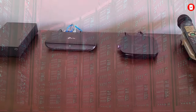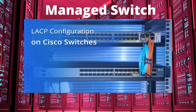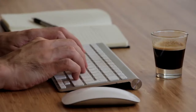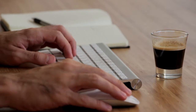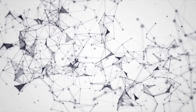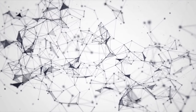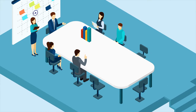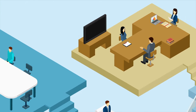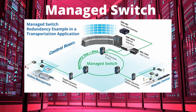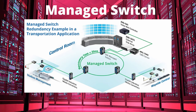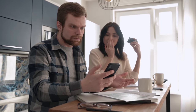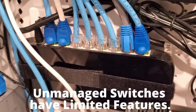On the other hand, a managed switch allows you to manage, configure, and monitor the settings of your LAN, including controls over LAN traffic, prioritizing certain channels, and creating new virtual LANs to keep smaller groups of devices segregated and to better manage their traffic. A managed switch also has features that can recover data in the event of a device or network failure — and an unmanaged switch has none of those features.